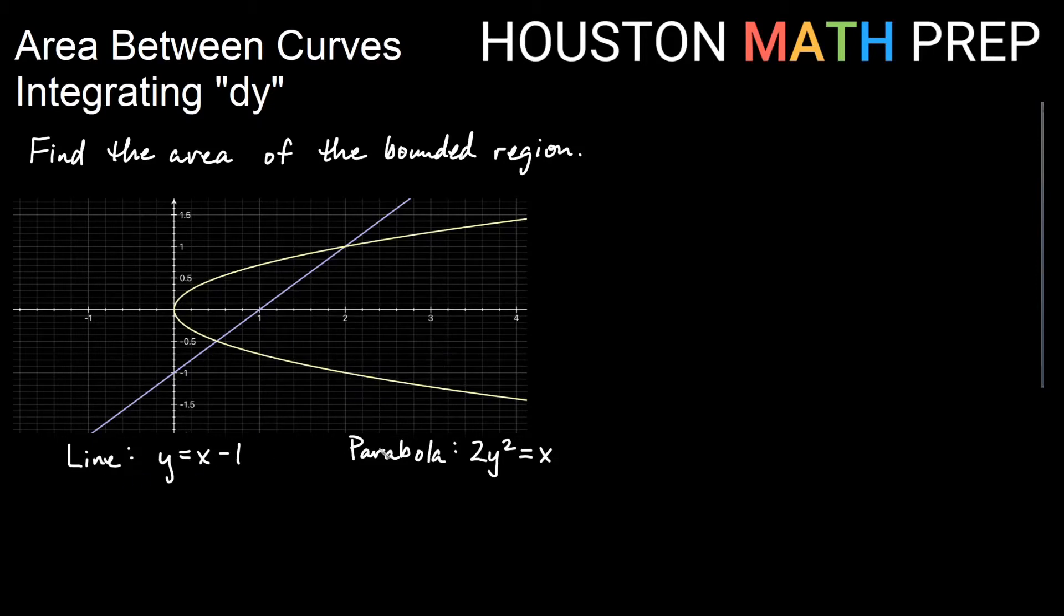So here we're going to be looking at integrating dy. I have a line and a parabola. When we integrated dx, remember that meant our rectangle was skinny in the x direction and so it ran up and down. It was long in the y direction and skinny in the x direction. So dx had the rectangle running this way. Dy will be a small amount of y, so it's long in the x direction and skinny in the y direction.